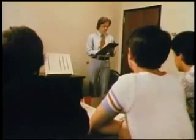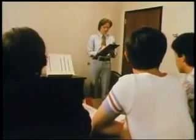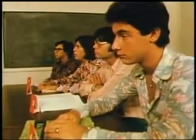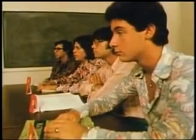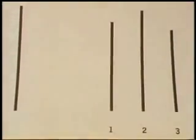Asch found subjects went along with the group on 37% of the critical trials, but he found through interviews that they went along with the group for different reasons. One type of subject genuinely believes the group is correct — 'They must be right, there are four of them and one of me.' This subject's yielding is based on a distortion of his judgment.